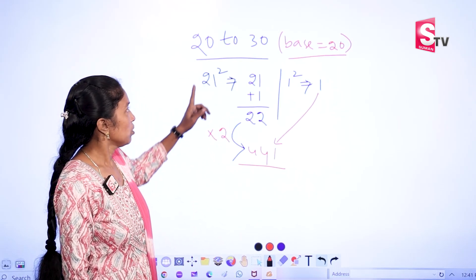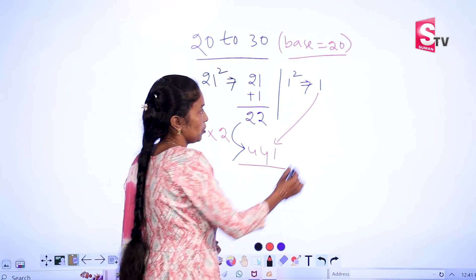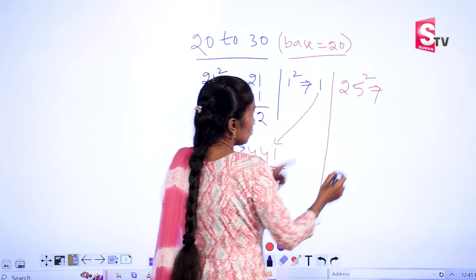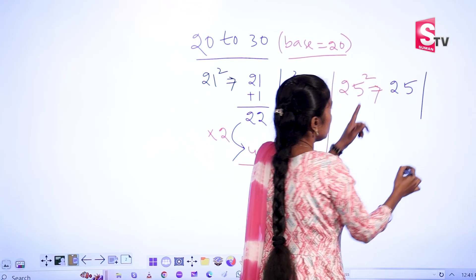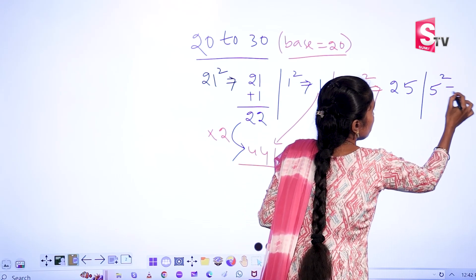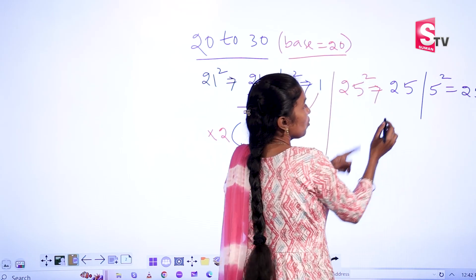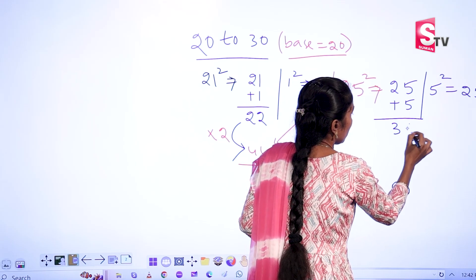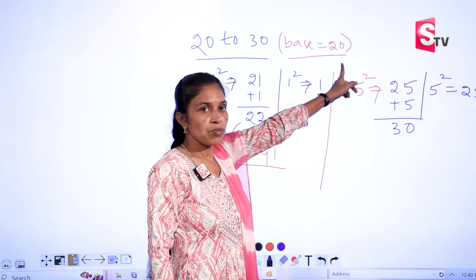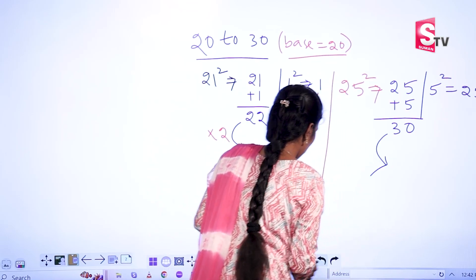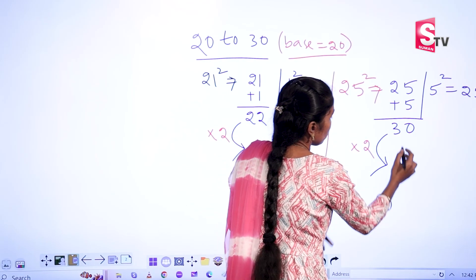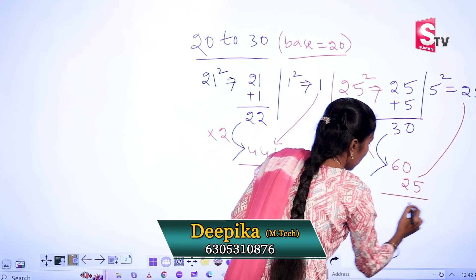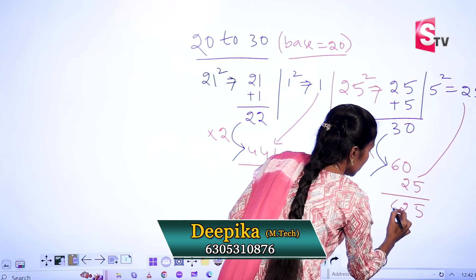This is a very simple shortcut method. You can take one more example from 20 to 30. I am taking 25 square. Write down 25 as it is, and 5 square write down separately — 5 square is 25. Next, we have 20, so add plus 5 here, giving 25 plus 5 is 30. Multiply by 2: 30 times 2 is 60. Write down this value. This is 5 to 6, so 625.